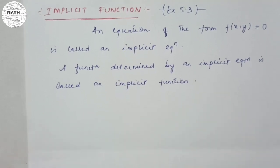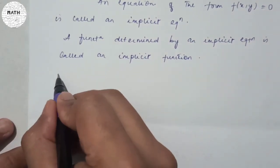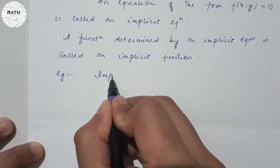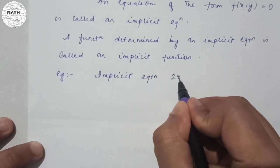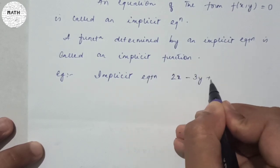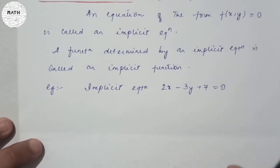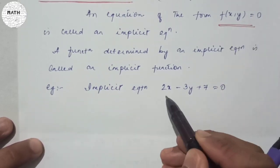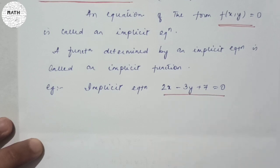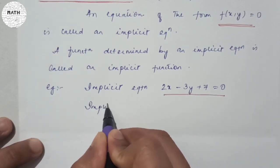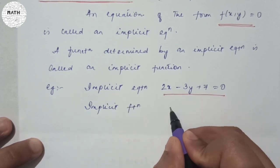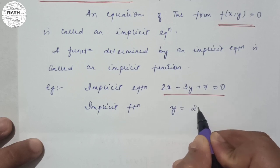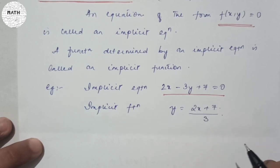You might be wondering what that means, so let me give an example. An implicit equation would be 2x minus 3y plus 7 equals 0, which is of the form f(x, y) = 0. Your implicit function would be found by solving for y, which gives y = (2x + 7) divided by 3. That is your implicit function.